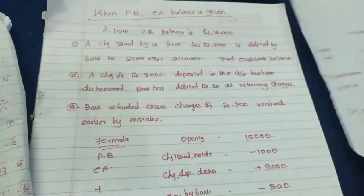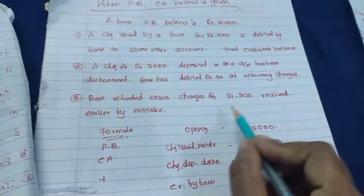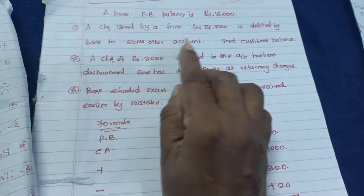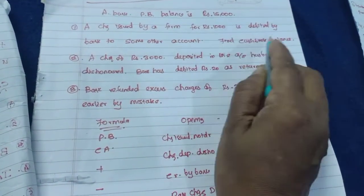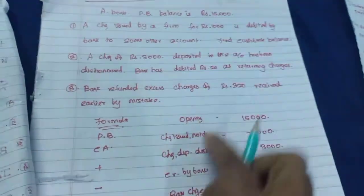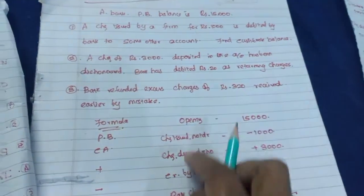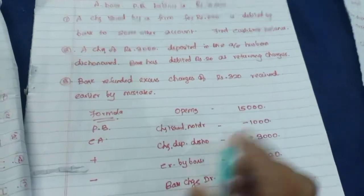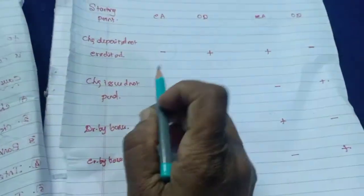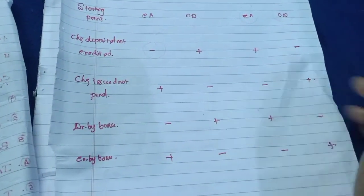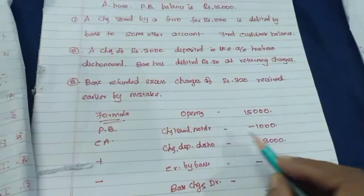Using the formula — plus, minus, plus, minus — the starting balance is Rs. 15,000. A check issued by the firm for Rs. 1,000 was debited to some other account, meaning the actual account was not debited. This is check issued but not debited, so we subtract Rs. 1,000. A check of Rs. 3,000 deposited in the account has been dishonored — check deposited not credited — the formula gives plus, so we add Rs. 3,000.